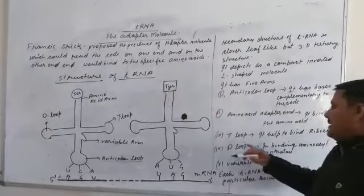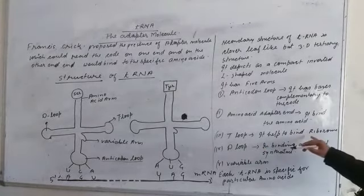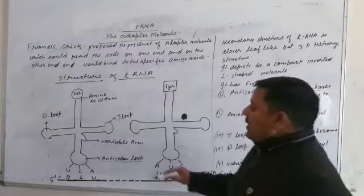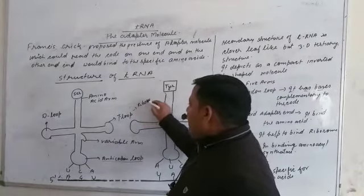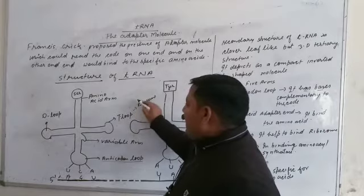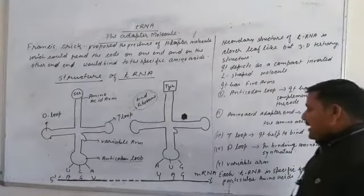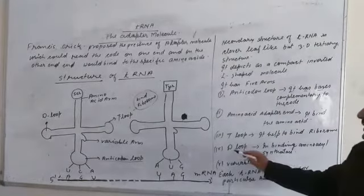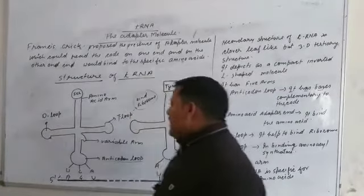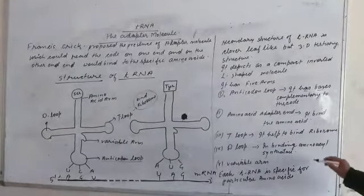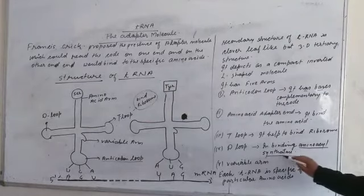Next is T loop. T loop binds to the ribosomes. Here in T loop, the ribosomes bind up. T loop also binds to aminoacyl synthetase enzyme.